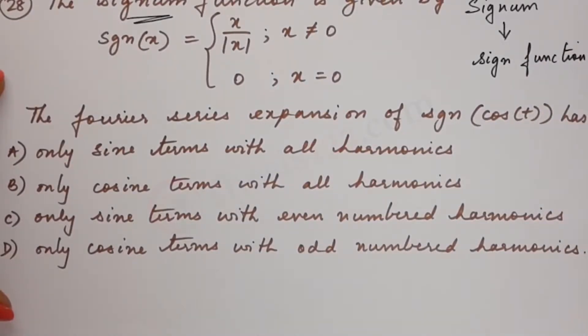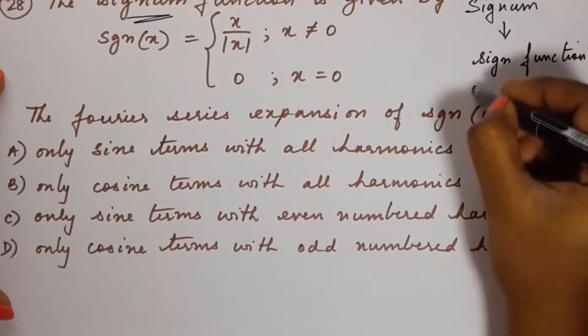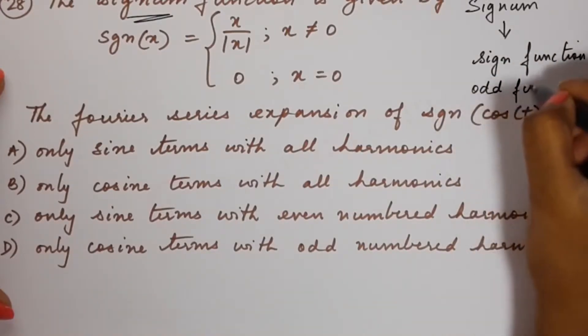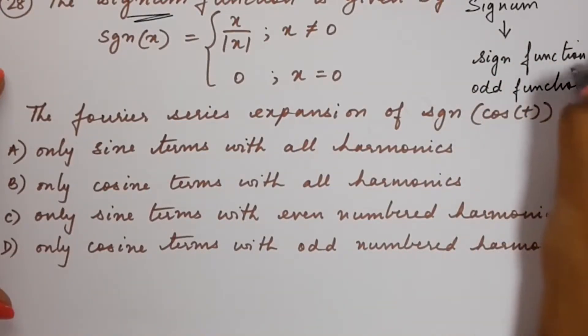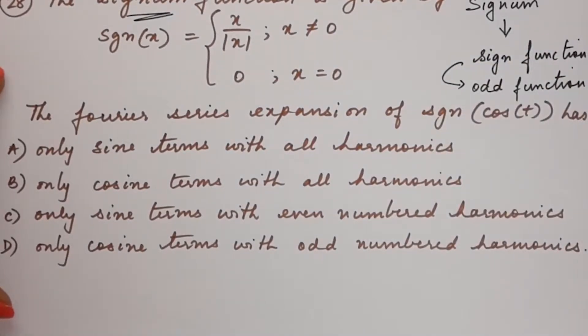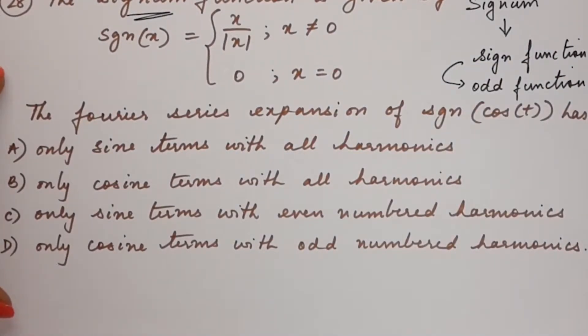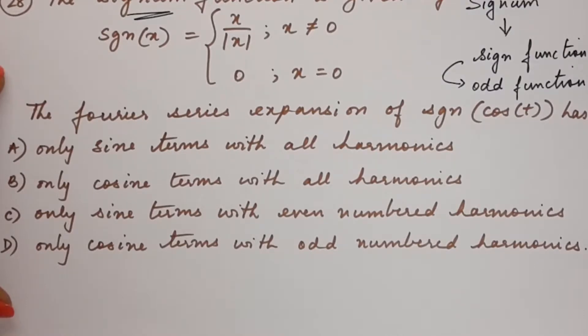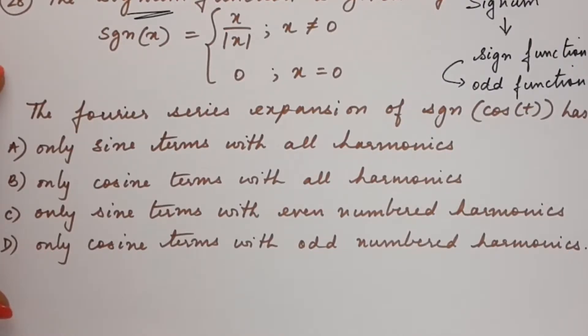And this sign function is actually an odd function. It is always an odd function. That's because the sign function is odd and it extracts the sign of a real number, only the sign of a real number.